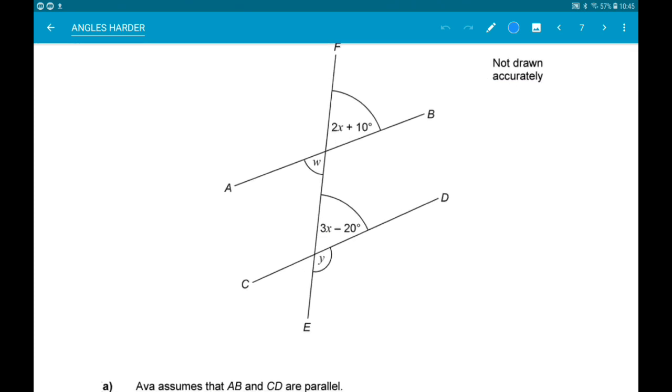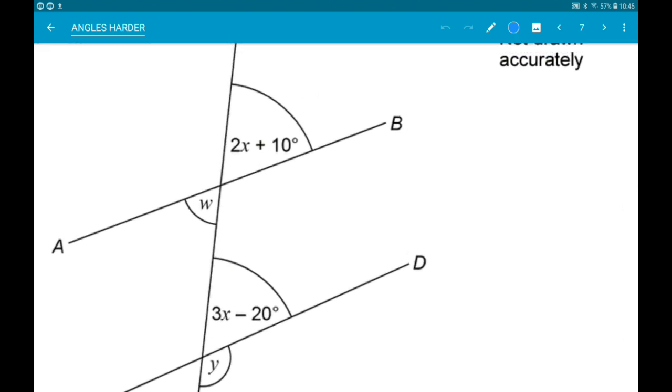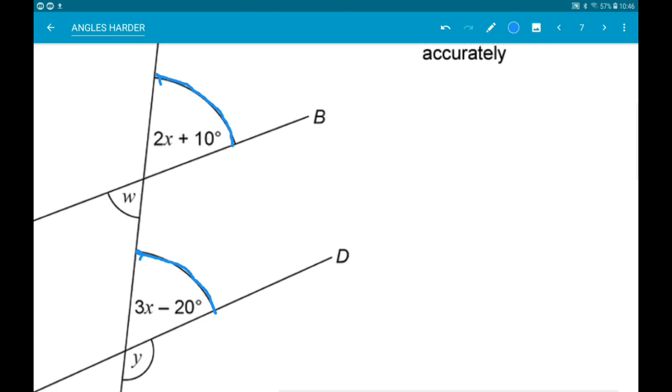Okay, so if AB and CD are parallel, then 2x add 10 and 3x minus 20 are corresponding angles and are the same. So to say something's the same in maths, we set them equal to each other. So 2x add 10 is equal to 3x minus 20. So this is going to allow us to work out x.